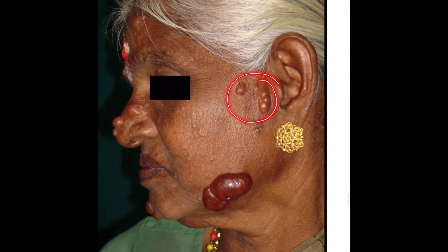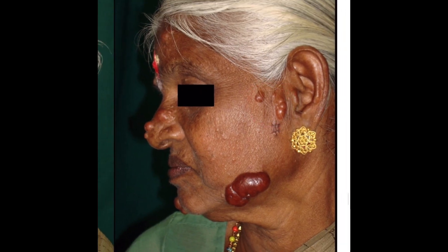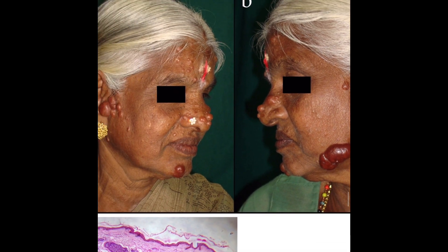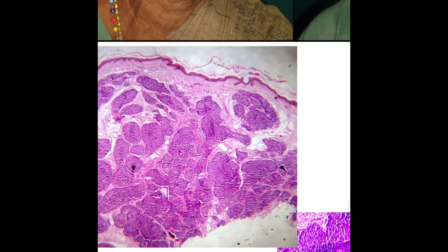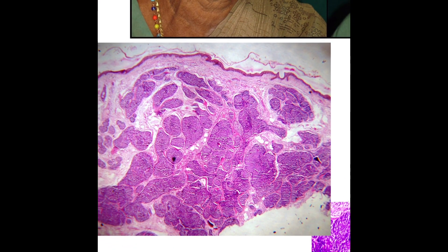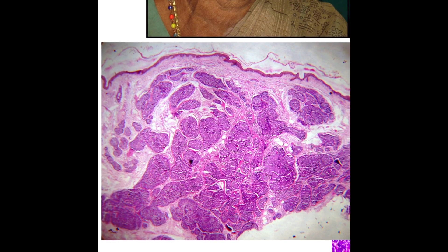Scalp examination was normal; skin, mucosa, nails, and hair showed no abnormalities. Histopathological examination revealed a non-encapsulated tumor composed of closely set tumor lobules forming mosaic-like masses, giving a zigzag puzzle appearance.